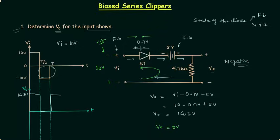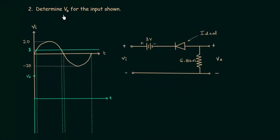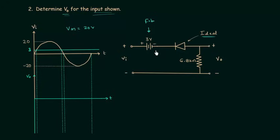Now we will solve the second problem. We have to plot the output waveform VO for the input shown — a sinusoidal input with VM equal to 20V, so the maximum voltage is 20V. The DC voltage source has a magnitude of 3V and is forward biasing the diode, which is ideal. When you only consider the 3V supply, the direction of current flows from right to left, matching the direction of the arrow, so it is forward biasing the diode. For the first half cycle, plus-minus is the polarity of VI, and if you neglect the DC source, VI alone is reverse biasing the ideal diode.